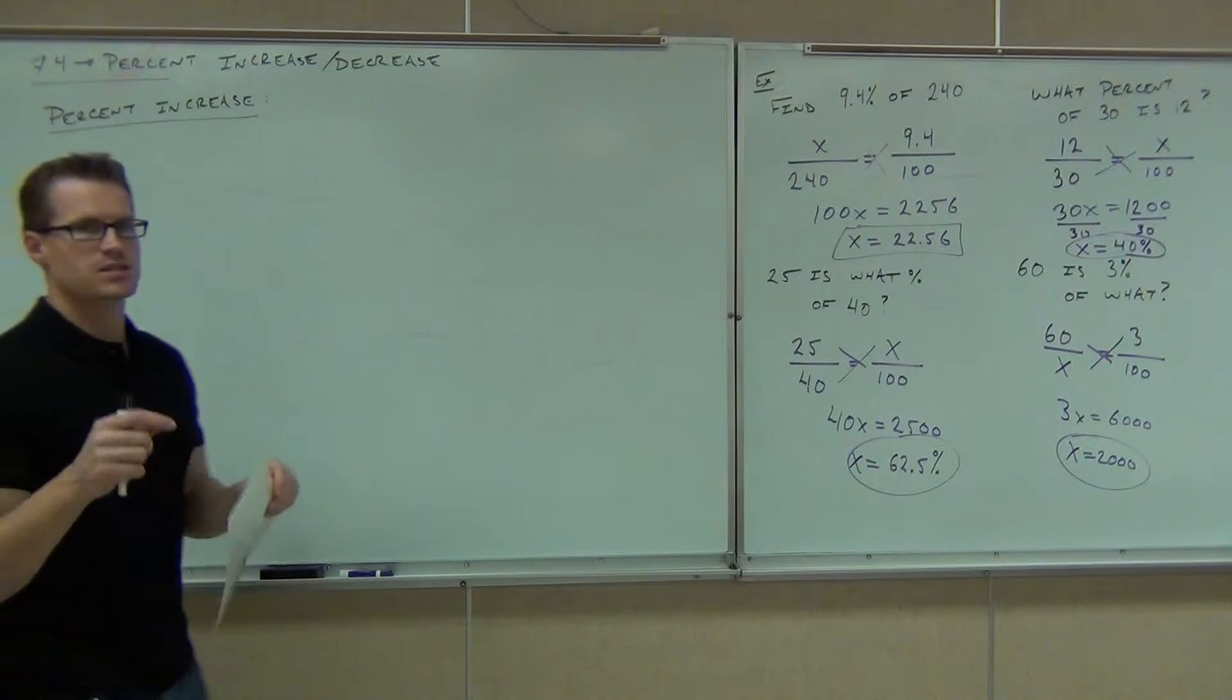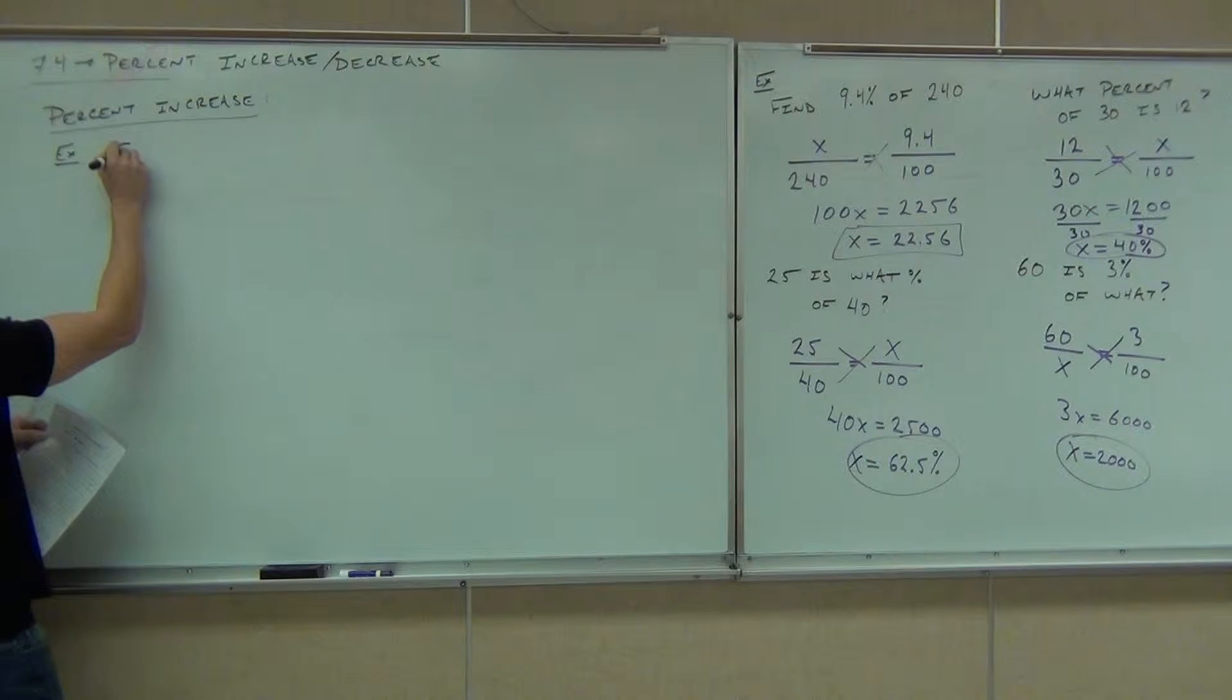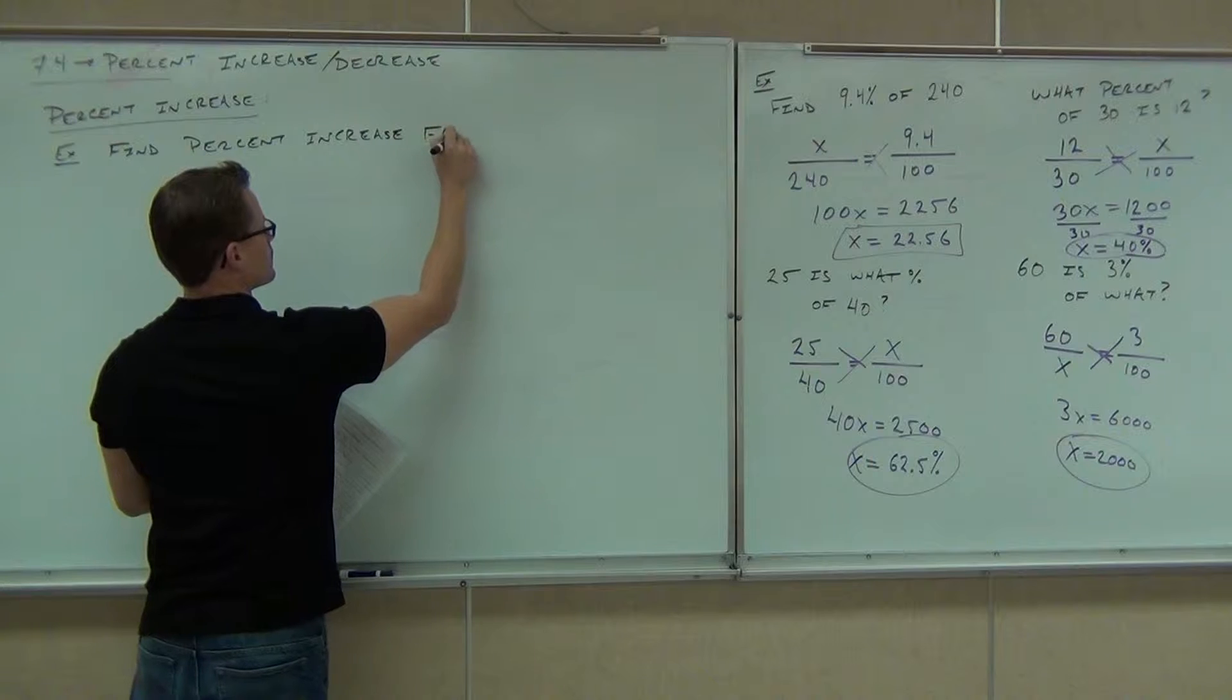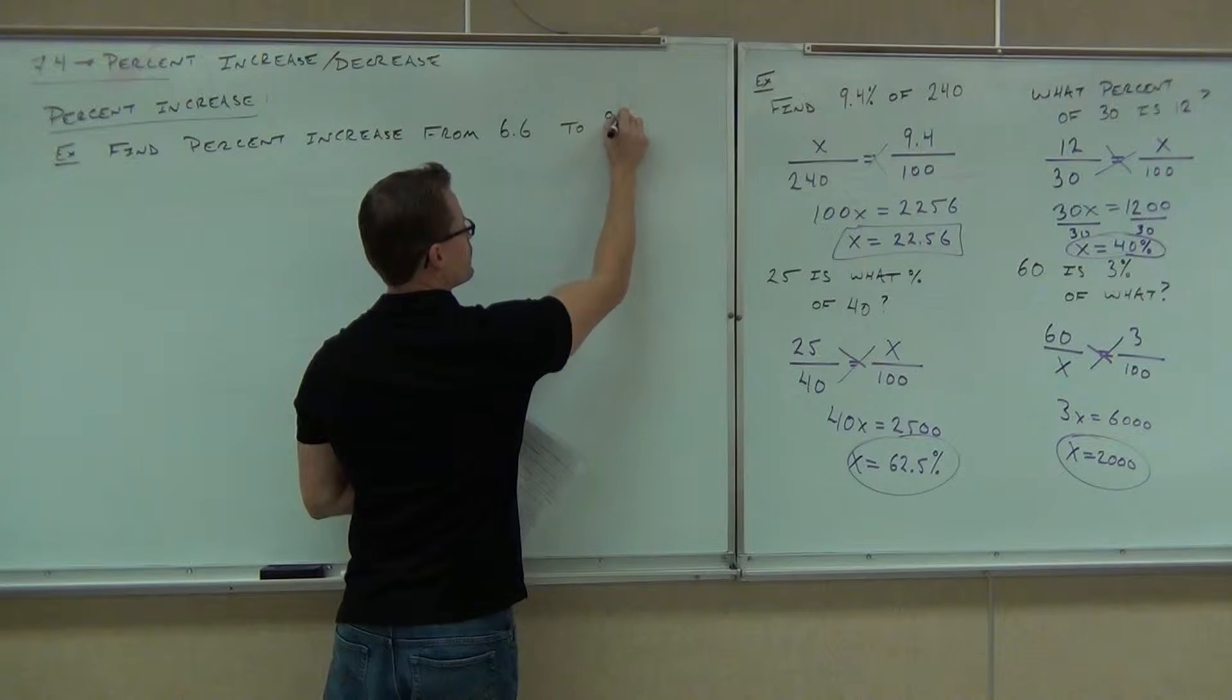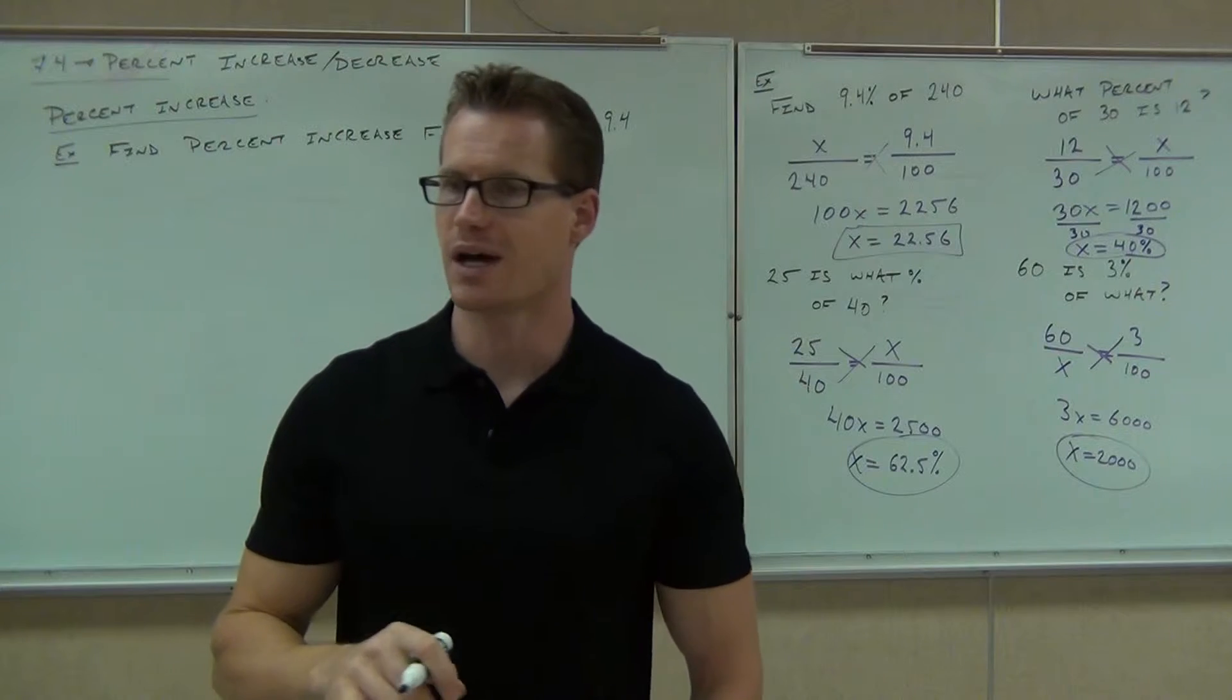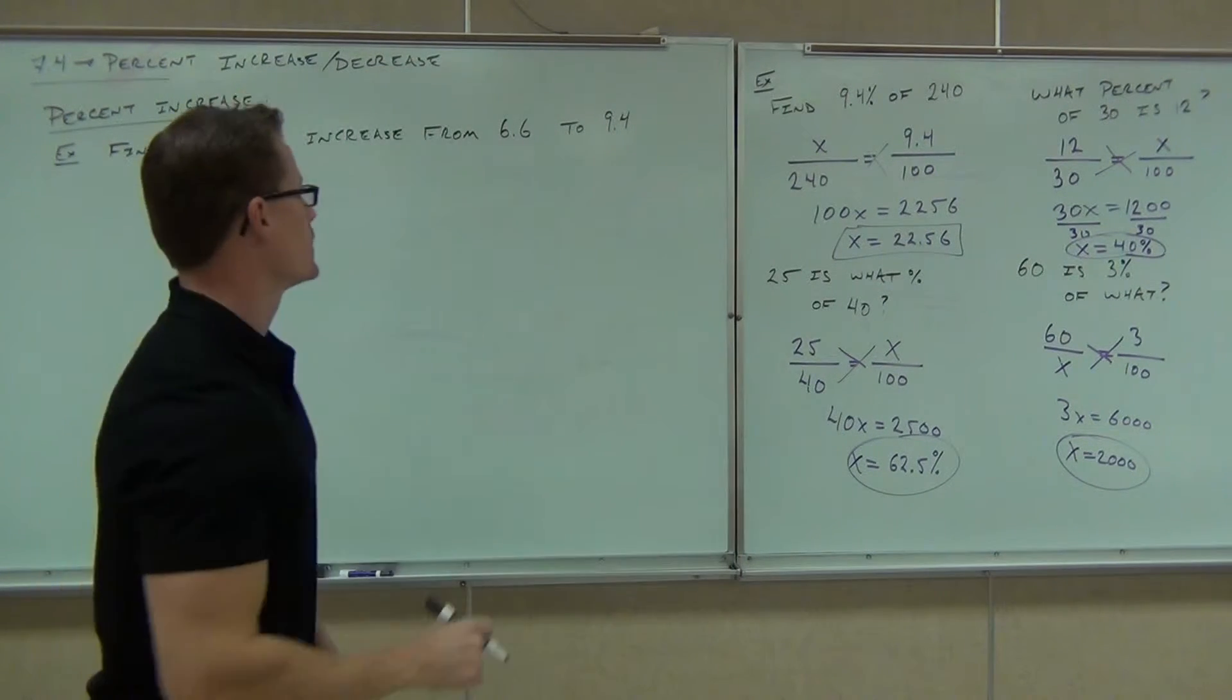So percent increase does this: it says from one number to another number, what's the percentage gain? We're going to figure that out right now. Find the percent increase from our 6.6 billion people to 9.4 billion people. This is a three-step process. I'll write the steps out, but you've got to remember to follow them because I give you this exact problem on a test. It's very specific what you have to do to get this thing right.